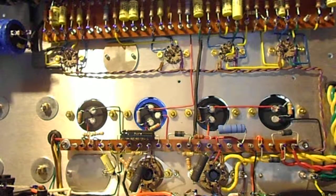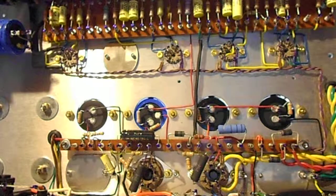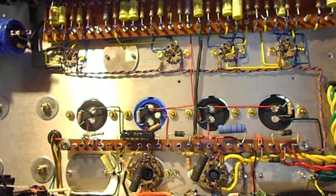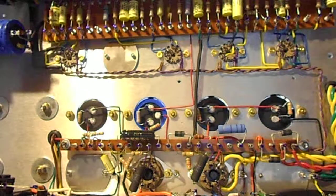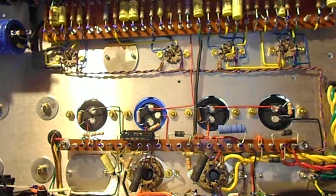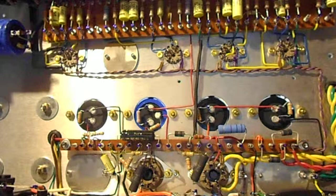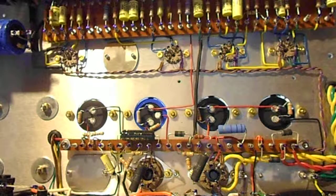So you know, the adage or rule of thumb that you should bias to between 60 and 70% of rated dissipation at the plate.